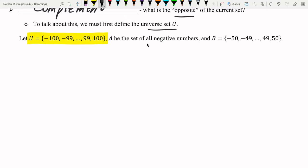And A is the set of all negative numbers. Of course, this is contained in U. So A is going to be the set negative 100, negative 99, negative 98, all the way up to negative 1. And that's it. Because those are the only negative numbers in our universe that we're working in.